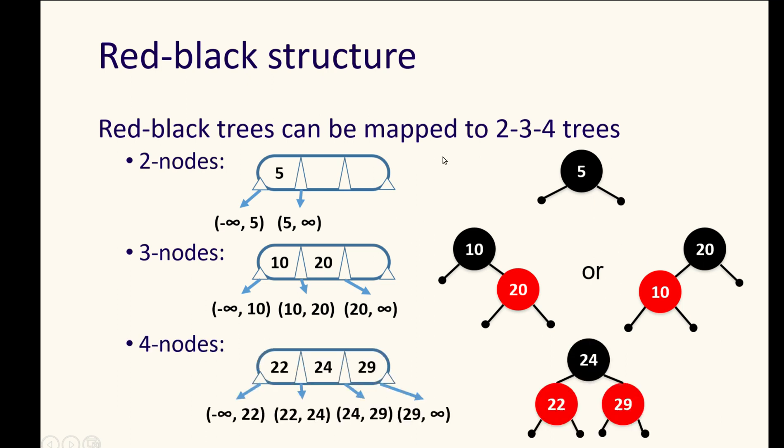And then our four nodes will be the complete parent with two children. And those will be equivalent to the 2-3-4 tree nodes that were full.